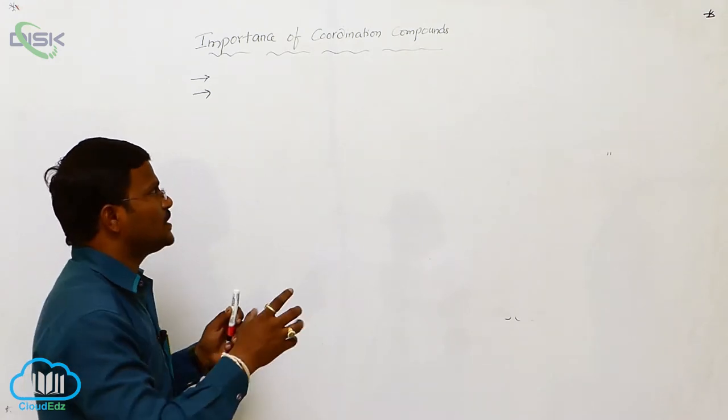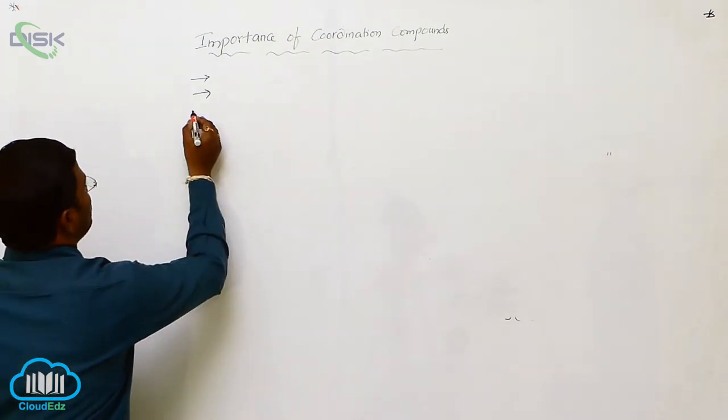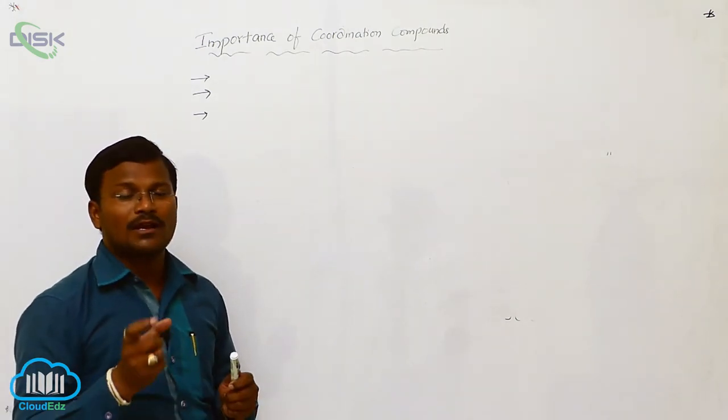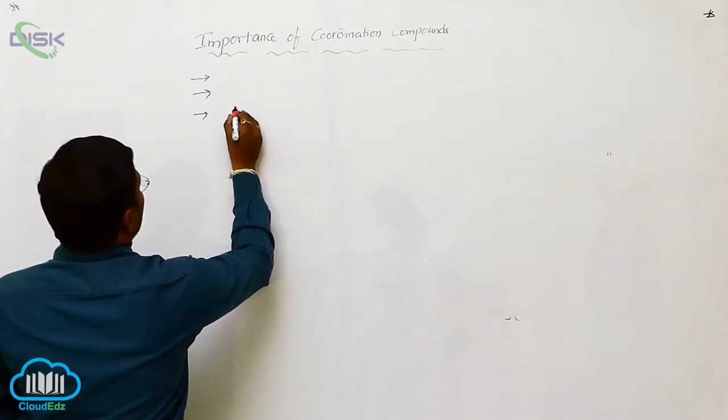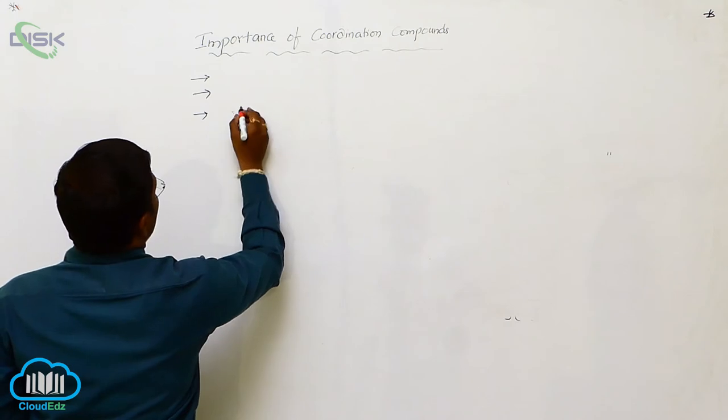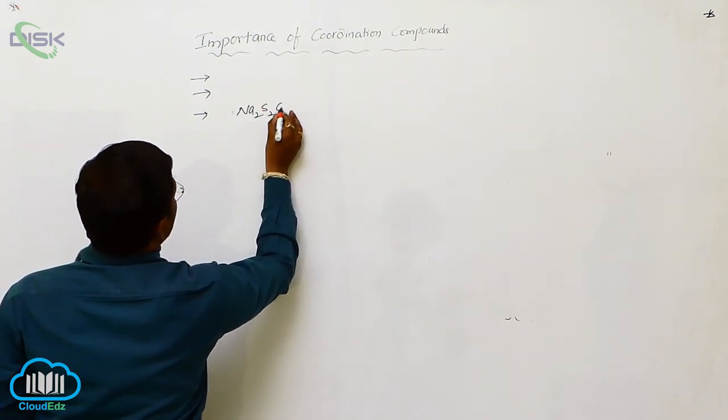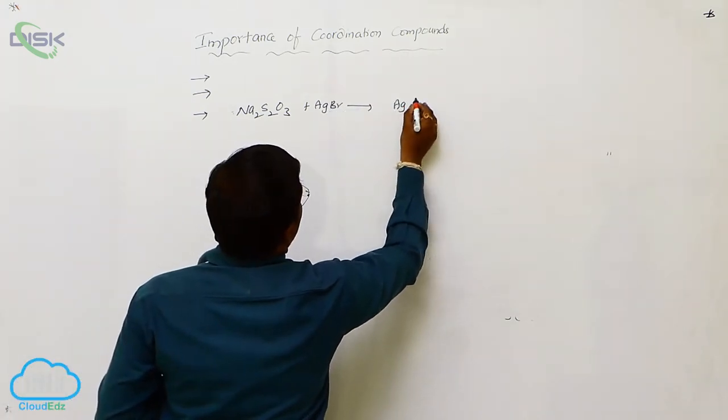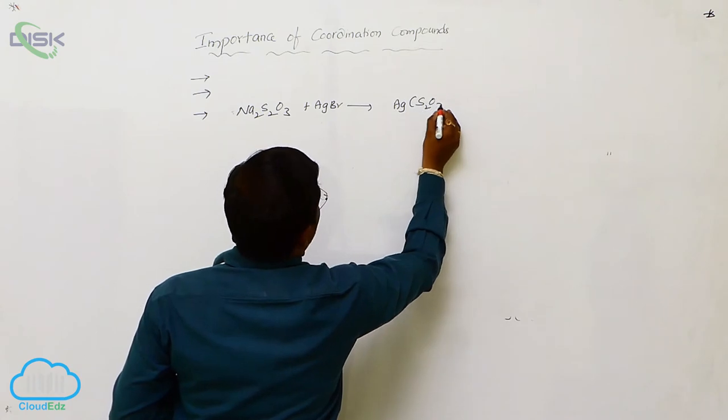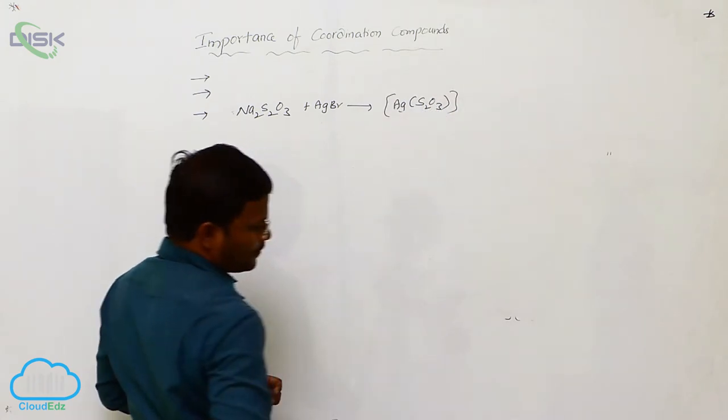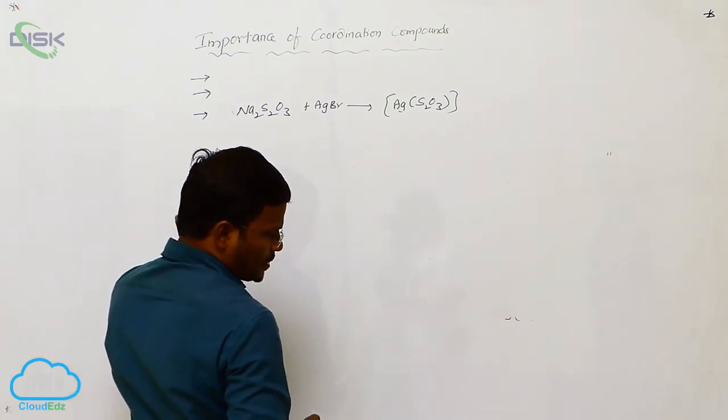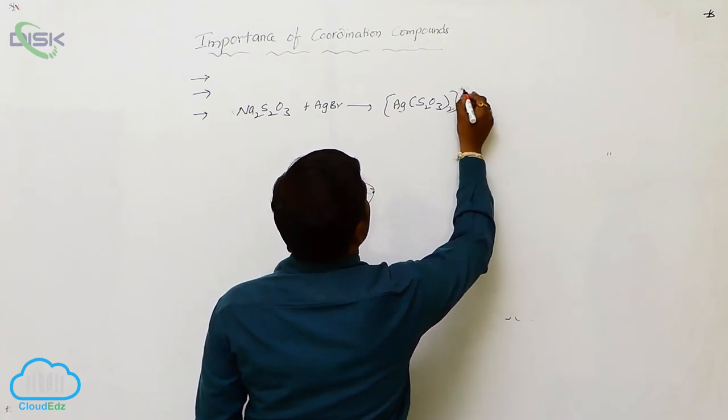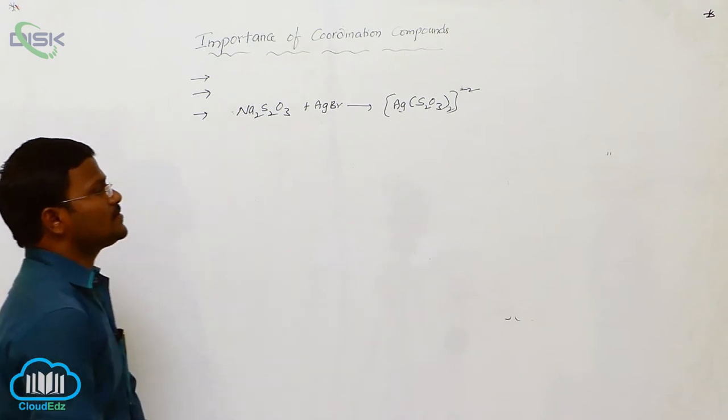That estimation is done using coordination compounds. Whereas, the coordination compounds are used in photographic black and white photography improvement. During the black and white photography improvement, sodium thiosulphate is used with silver bromide which can produce a coordination compound represented as Ag(S2O3)2 taken twice minus 2.